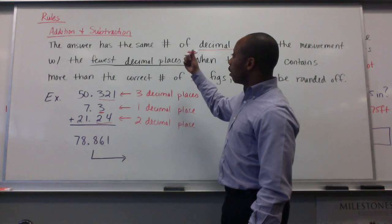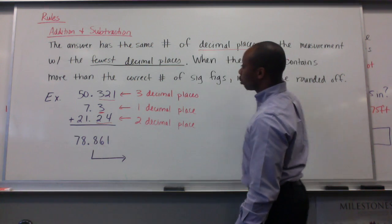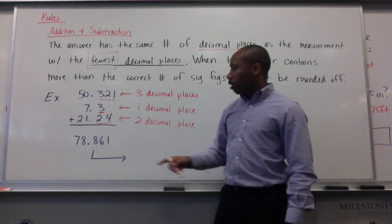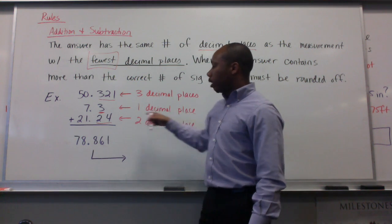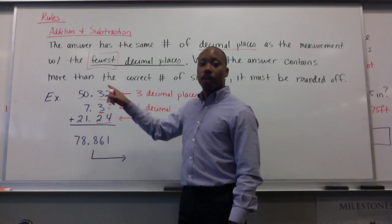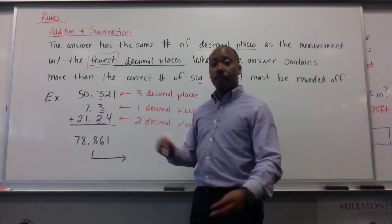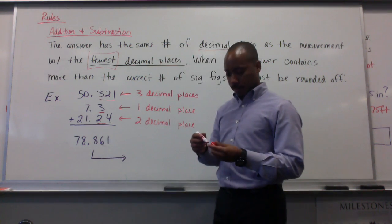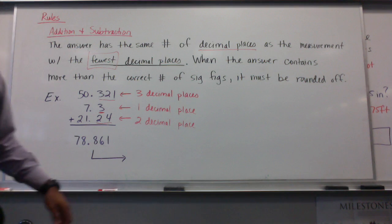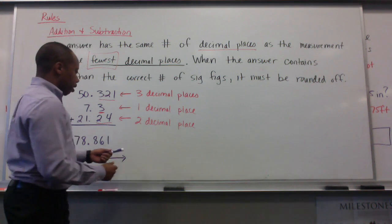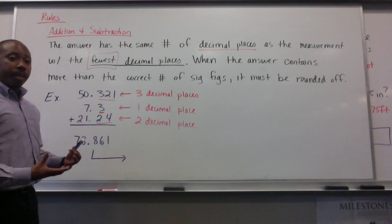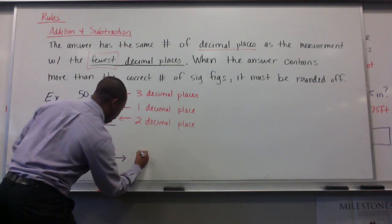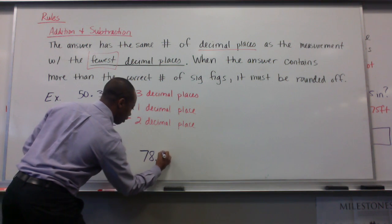The rule says the answer has the same number of decimal places as the measurement with the fewest decimal places. 7.3 has the fewest decimal places, so this is going to determine the number of significant figures in my final answer. If I do all this mathematics out, I get 78.861. To get my final answer accounting for significant figures, I have to round this accordingly. My final answer will be 78.9.